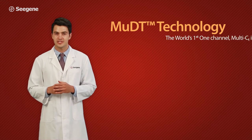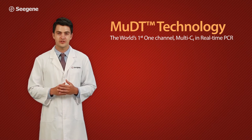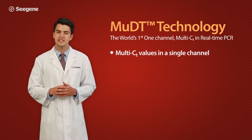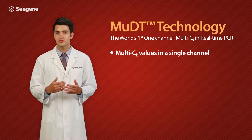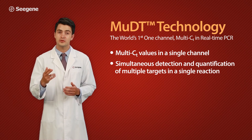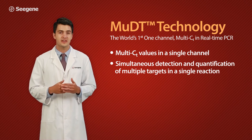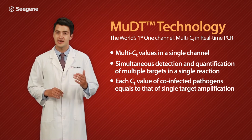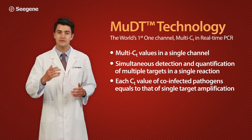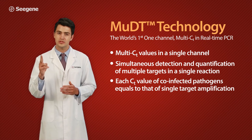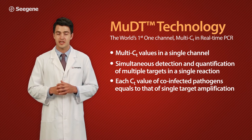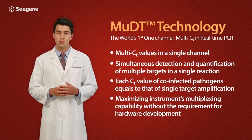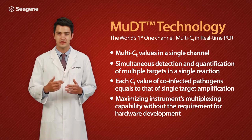MUDT technology — the world's first one-channel multi-CT in real-time PCR. Multi-CT values in a single channel. Simultaneous detection and quantification of multiple targets in a single reaction. Each CT value of co-infected pathogens equals that of single target amplification. Maximizing instrument multiplexing capability without the requirement for hardware development.